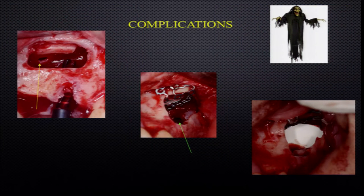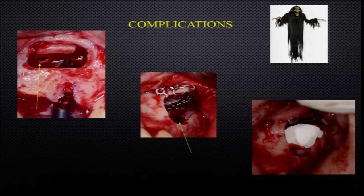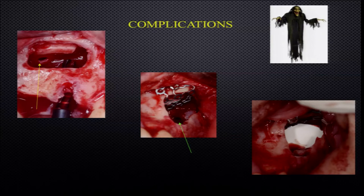The most common complication in maxillary sinus procedures is perforation of the sinus lining — it can occur during the lifting procedure or during implant placement itself. It can be easily managed by placing an isolating medium between the maxillary sinus and bone graft underneath: a collagen membrane, AlloDerm, or PRF — anything that isolates the sinus compartment from the graft material below.